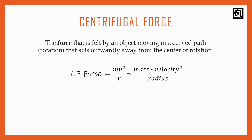Now let's look at three factors: mass, velocity, and radius. Mass and velocity are directly proportional to centrifugal force. That is, if the mass or velocity increases, the object experiences a greater centrifugal force acting outwardly. If you look at the radius, the centrifugal force is inversely proportional to the radius.